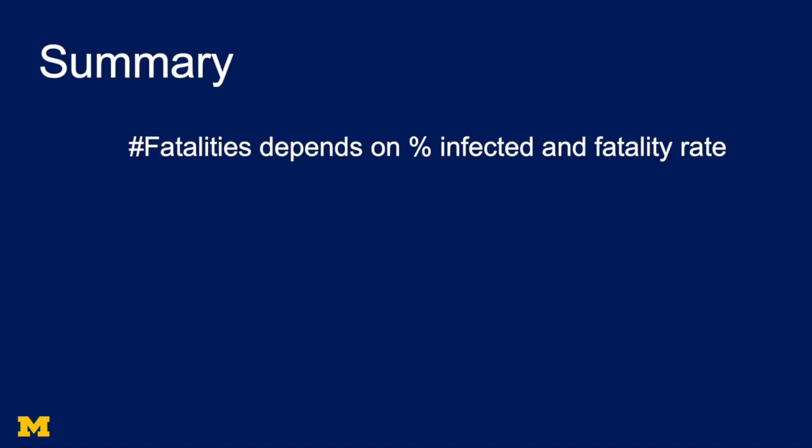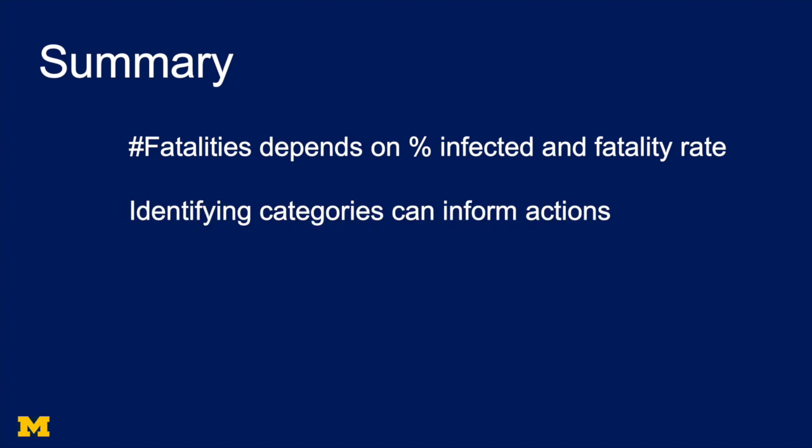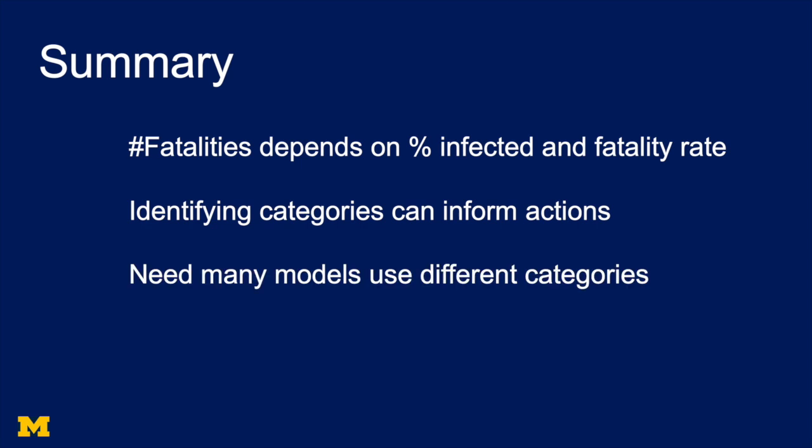Quick summary. In the fatality rate model, the number of fatalities depends on the number infected and the fatality rate — those are the things we try to make sense of. By breaking people into categories, we can inform action and make wiser policy choices. We need to use multiple models with different categories to make robust predictions. But as we construct this model, we also see the need for more models, because the big remaining question is: how do we predict how many people get infected? There's a huge difference between 2% and 30% infected — so that's where we'll go next, talking about models that help us predict the percentage infected and what actions can reduce it.